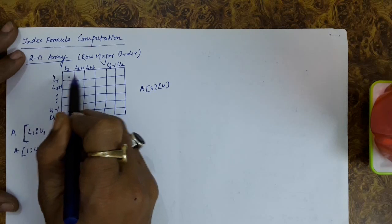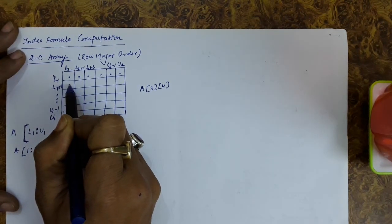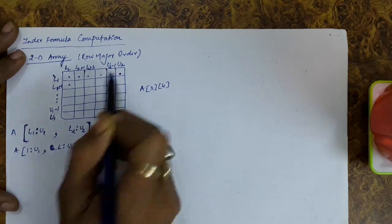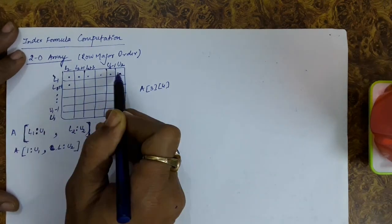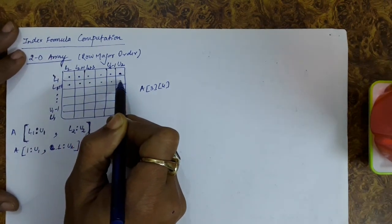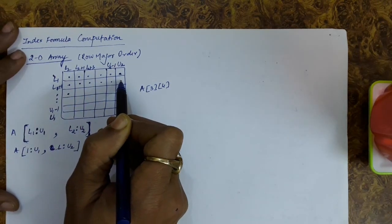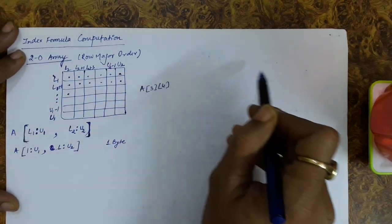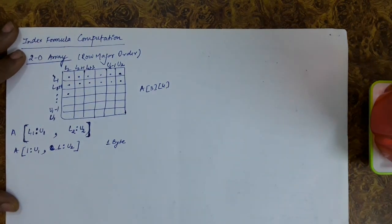In memory, storing elements in row-major order means we store the first element, then the next, then the next, and so on sequentially. The address of each adjacent element is just one distance apart. In fact, in memory the 2D array looks just like a 1D array — elements are stored in contiguous memory locations.